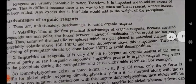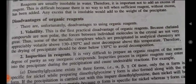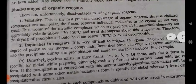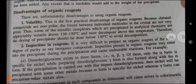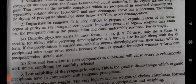Disadvantage 2 — Impurity in reagent: It is very difficult to prepare an organic reagent of the same degree of purity as an inorganic compound. Impurities present in organic reagents may enter into the precipitate during precipitation and cause undesirable reactions. For example, dimethylglyoxime exists in three forms — alpha, beta, and gamma. Of these, only the alpha form is specific for nickel. While preparing dimethylglyoxime, the gamma form is also formed. If precipitation is carried out with impure dimethylglyoxime, the nickel will be co-precipitated with some other metals, because the gamma form can precipitate other metals also.